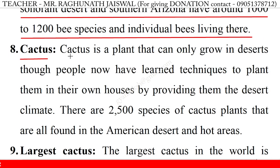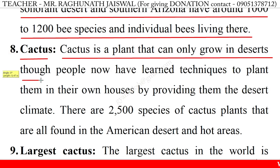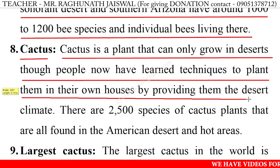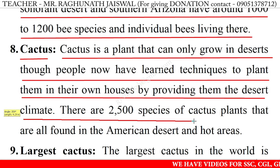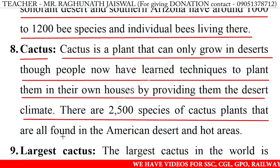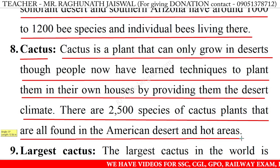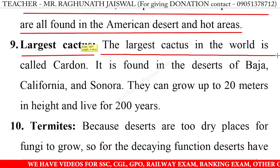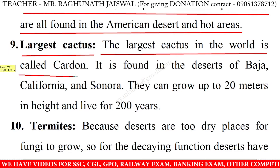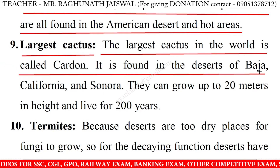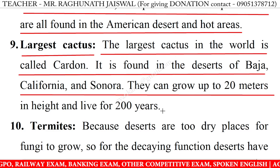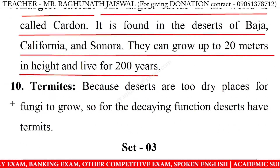8. Cactus: Cactus is a plant that can only grow in the desert, though people have now learned techniques to grow them in their own homes by providing desert-like climate. There are 2,500 species of cactus plants found in the American desert and hot areas. 9. Largest Cactus: The largest cactus in the world is called the Cardón. It is found in the desert of Baja California and Sonora. They can grow up to 20 meters in height and live for 200 years.